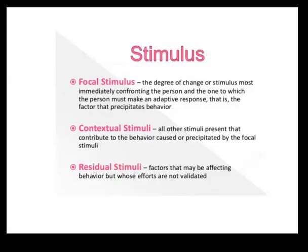The first component is input — stimuli. There are three different stimuli. First is focal stimulus: the degree of change or stimulus most immediately confronting the person; it is the primary problem to which the person must make an adaptive response and the factor that precipitates behavior. Second is contextual stimuli: all other stimuli present that contribute to the behavior caused or precipitated by the focal stimuli — these are secondary or associated problems.